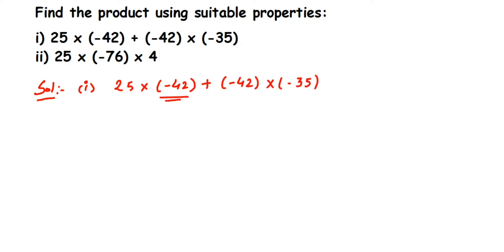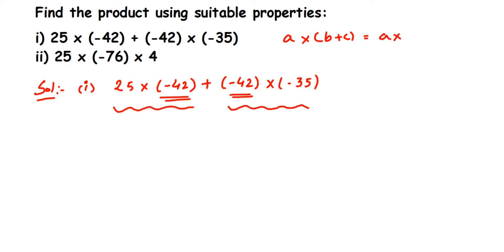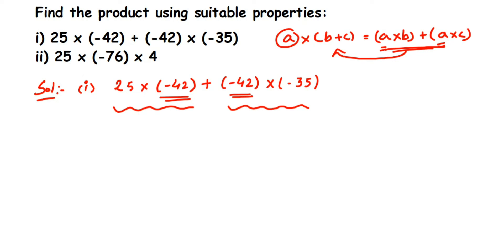Here you can see minus 42 appears in the first part and also in the second part — 42 is common. So we're going to pull out minus 42 using the distributive property. You might remember: a into b plus c equals a into b plus a into c, where a is common in both terms.